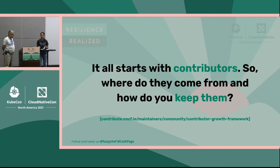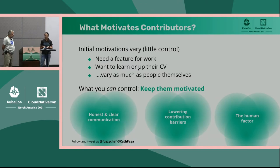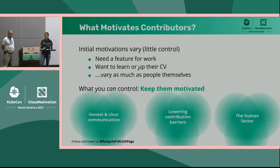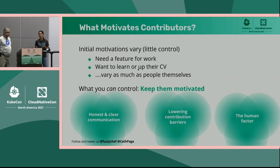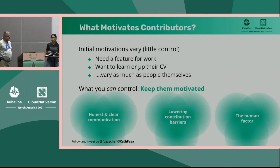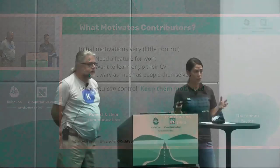It all starts with contributors — where do they come from and how do you keep them? Initial motivation varies as much as people themselves. Some need a feature, some want to learn something, some just want to be part of an open source project. It's difficult to control that trigger, but what you can control is keeping them motivated once they've started contributing — by creating a really awesome and welcoming experience. Today we're going to cover three buckets: honest and clear communication, lowering contribution barriers, and the human factor.